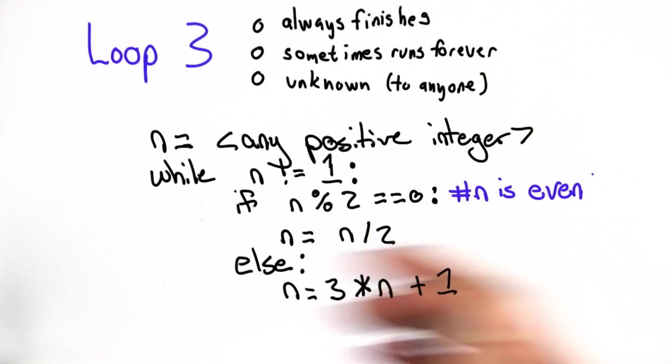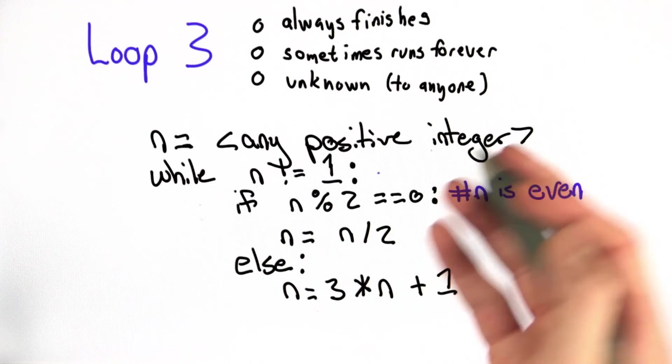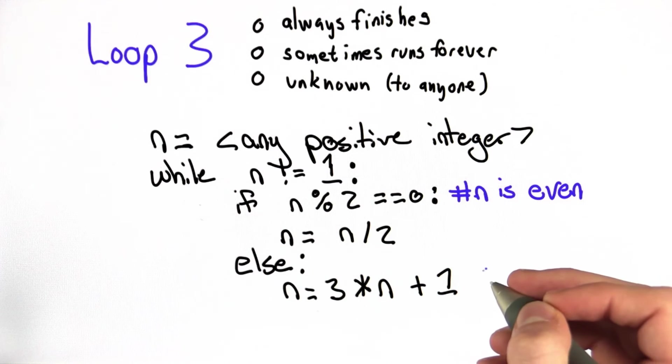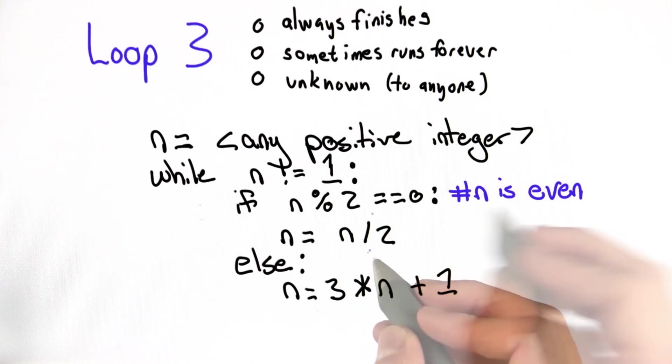So let's look at this last loop. It's pretty simple code. We're given an integer n, which is any positive integer. While that integer is not equal to 1, if it's even, we divide by 2. Otherwise, we multiply by 3 and add 1.